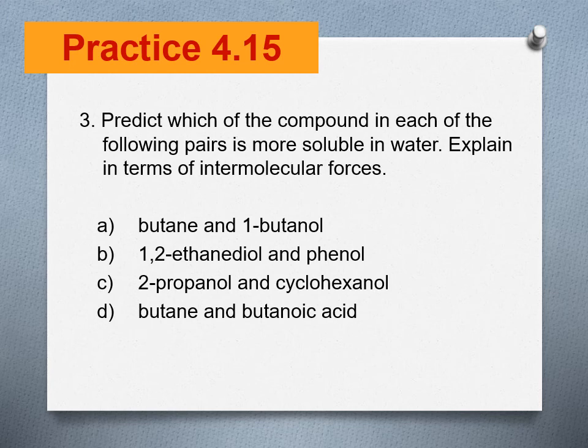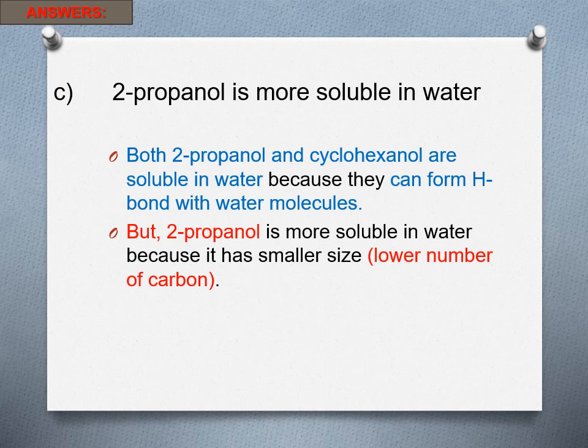Practice 4.15: predict which compound in each pair is more soluble in water, and explain in terms of intermolecular forces. We need to identify the type of intermolecular forces before determining which is more soluble. For part C, both 2-propanol and cyclohexanol are soluble in water because they both have hydrogen bonding. But 2-propanol is more soluble because it is smaller. Cyclohexanol has 6 carbons, so its non-polar hydrocarbon portion is larger, making it more difficult to dissolve in water, as the effective hydrogen bonding is also weaker.